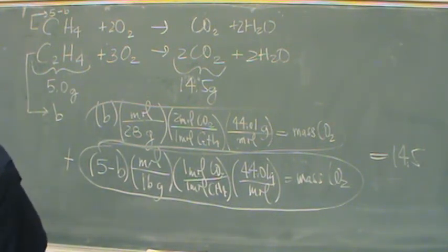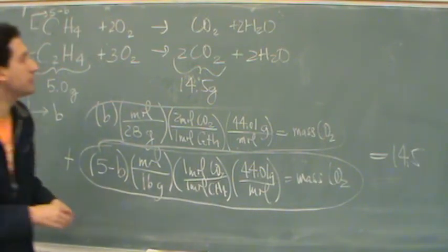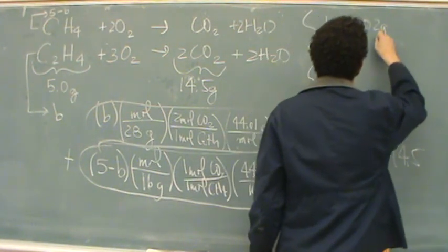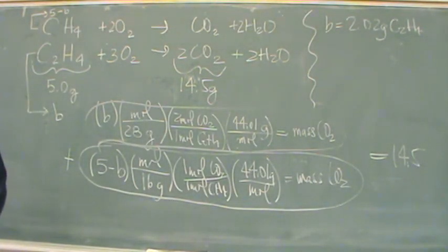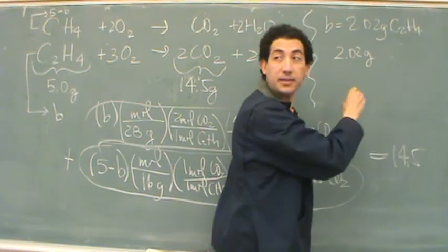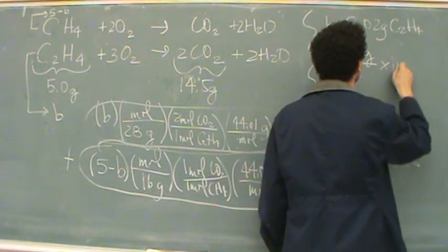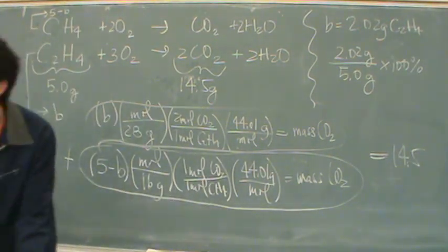Let me see if I have that. So the mass, when you do that, the mass of the ethylene, or the letter B, will be 2.02. So B will end up being 2.02 grams, and that's of the C2H4. Go back to the question. That's not exactly what they wanted. They wanted the mass percent of ethylene. So all you do is say, well, mass percent, that would be the mass of interest, ethylene, over the total mass, 5, times 100. That turns out to be 40.4 percent.